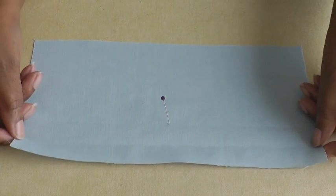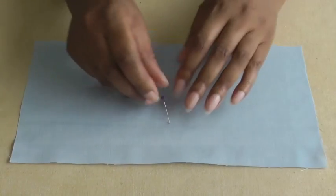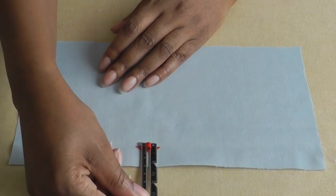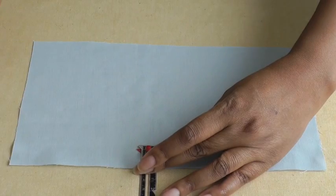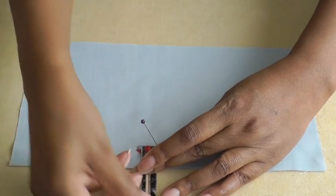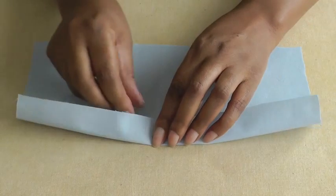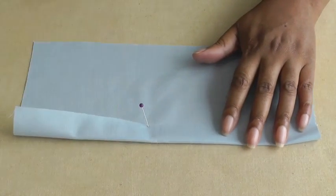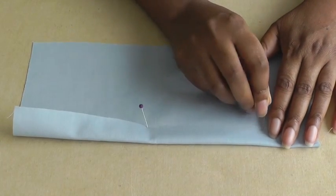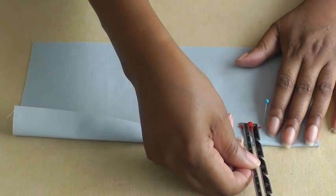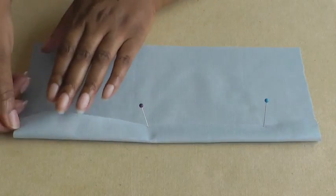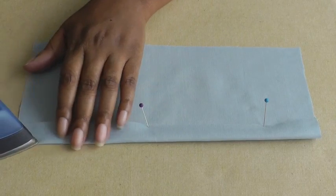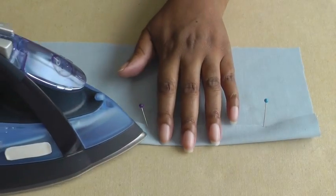To get my double fold what I need to do is fold up half of that measurement, so it's going to be one inch or 2.5 centimeters and place a pin there. Fold up, place my pin, just place another one here and just check to make sure that it matches up. Happy with that. Then your next thing you need to do is get your iron and gently just press in that crease.